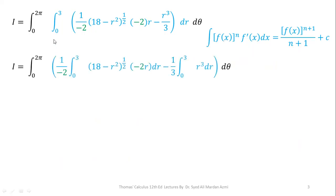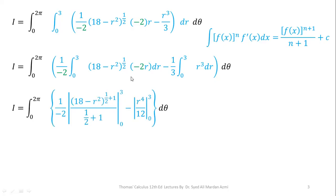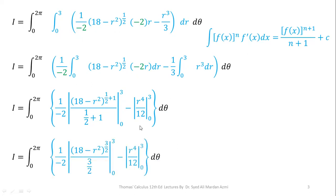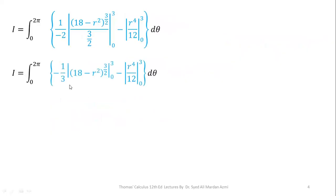We separate the integral on each term so that integration can be performed individually. Applying the formula to the first term, we have minus 1 over 2 times (18 − R²)^(1/2 + 1) divided by (1/2 + 1), evaluated from 0 to 3. For the second term, the integration of R³ is R⁴ over 4; multiplying 4 with 3 gives R⁴ over 12, evaluated from 0 to 3.